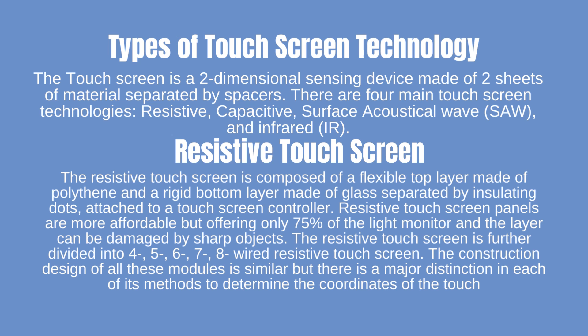The touchscreen is a two-dimensional sensing device made of two sheets of material separated by spacers. There are four main touchscreen technologies: resistive, capacitive, surface acoustic wave (SAW), and infrared (IR). The resistive touchscreen is composed of a flexible top layer made of polythene and a rigid bottom layer made of glass separated by insulating dots, attached to a touchscreen controller. Resistive touchscreen panels are more affordable but offer only 75% of the light from the monitor and the layer can be damaged by sharp objects. The resistive touchscreen is further divided into four, five, six, seven, and eight-wired variants, each with a similar construction but different methods to determine touch coordinates.